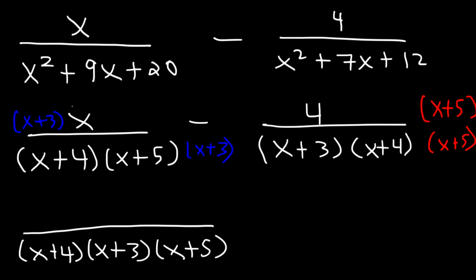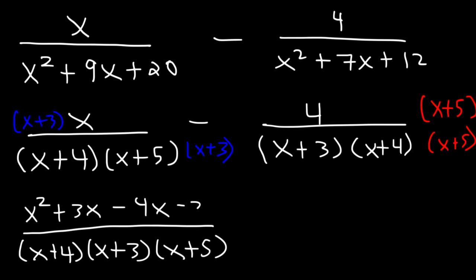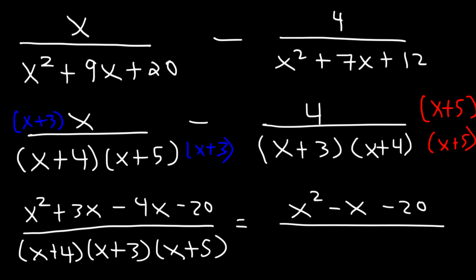Distributing x times x plus 3 gives x squared plus 3x. And 4 times x plus 5 is 4x plus 20, but incorporating the negative sign gives negative 4x minus 20. Combining like terms: 3x minus 4x is negative x. So the numerator is x squared minus x minus 20.